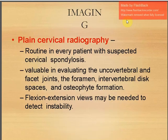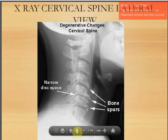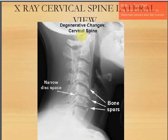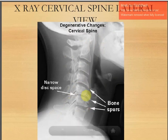For imaging: plain cervical radiography is routine in every patient with suspected cervical spondylosis — valuable in evaluating unco-vertebral and facet joints, foramina, intervertebral disc spaces, and osteophyte formation. Flexion-extension views may detect instability. X-rays show degenerative changes — narrow disc spaces, bone spurs, irregularity, and emergence of osteophytes at vertebral body margins.